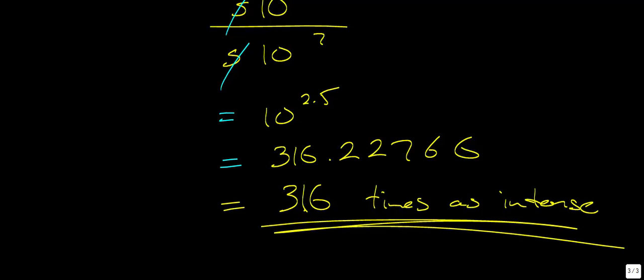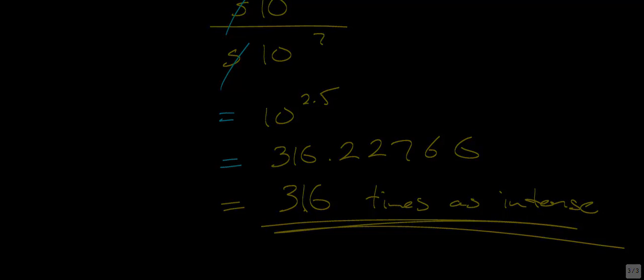That's interesting when you consider intensity versus magnitude — a difference of 2.5 on the Richter scale translates to over 300 times the intensity. This concludes this lesson and this unit on exponents and logarithms. Thank you very much.